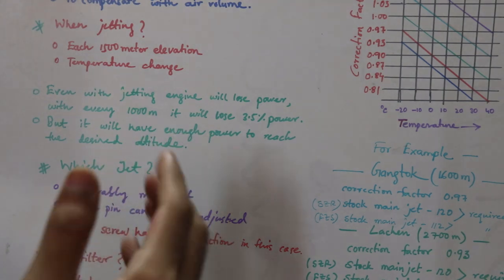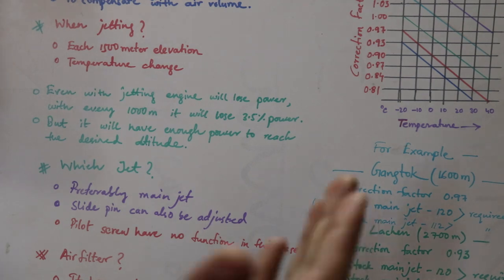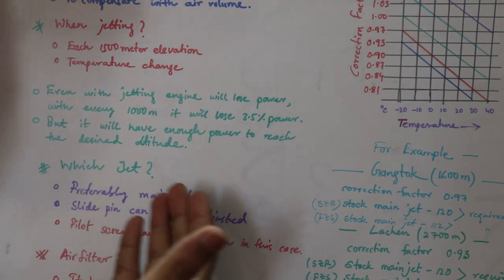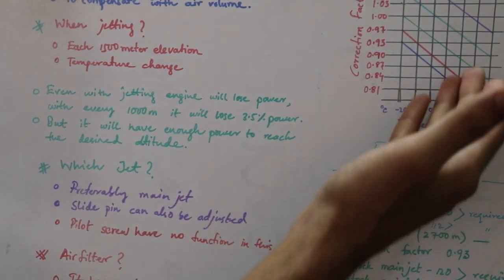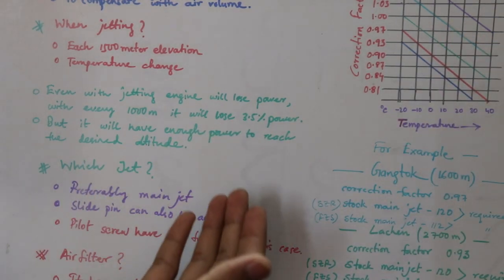With every 1,000 meter the power will drop to about 96.5%, that is you will be losing 3.5% of power in every 1,000 meter of elevation. But it will have enough power to reach where you want to reach. That means if you calculate the required jetting from this graph you will be able to reach the altitude.